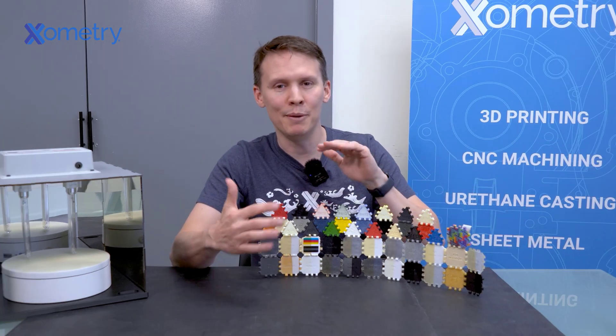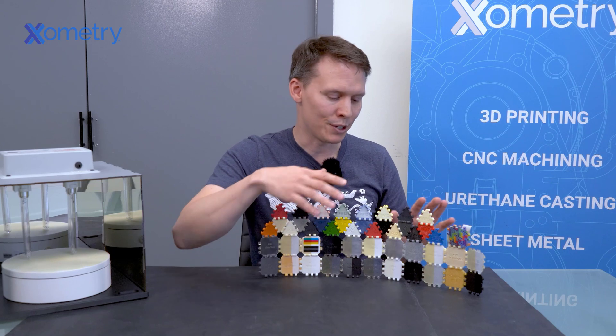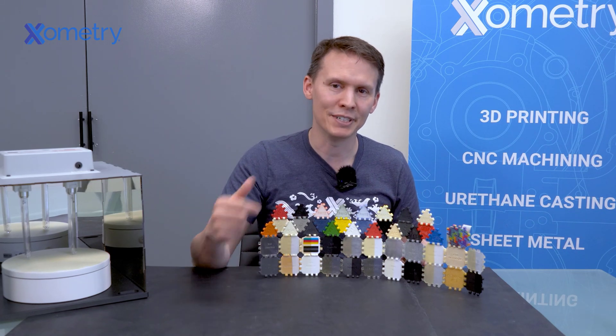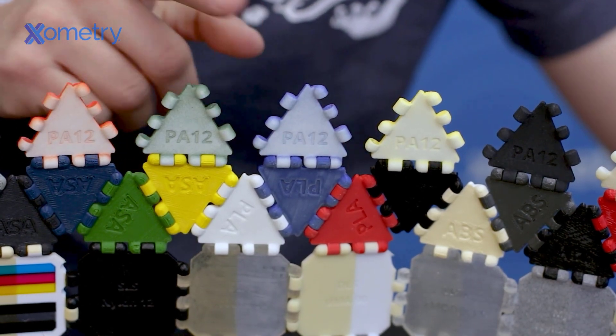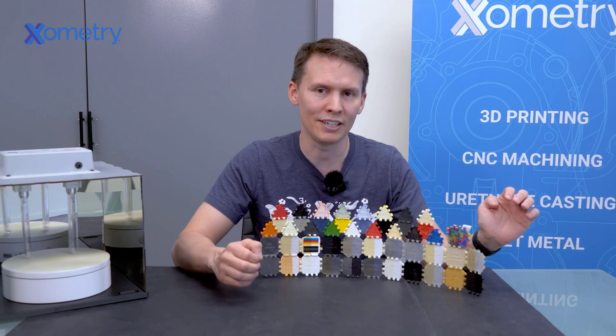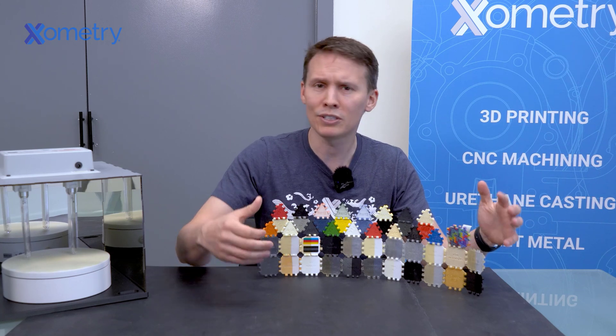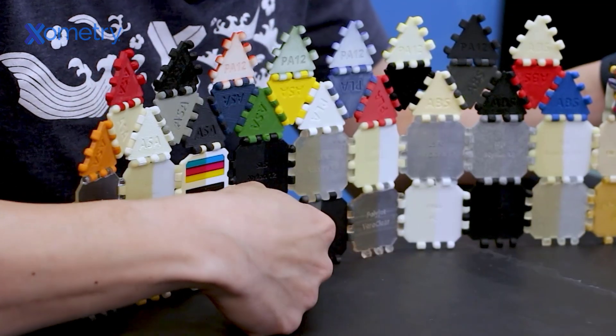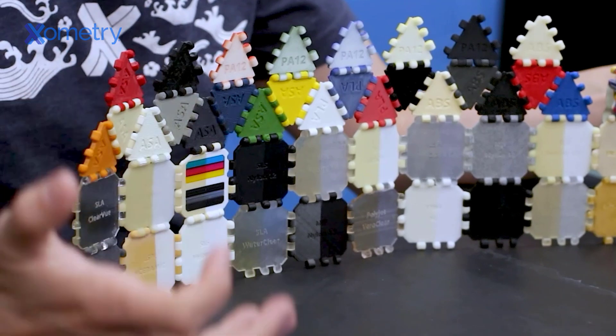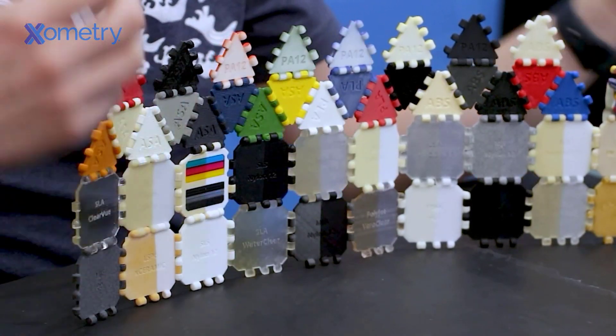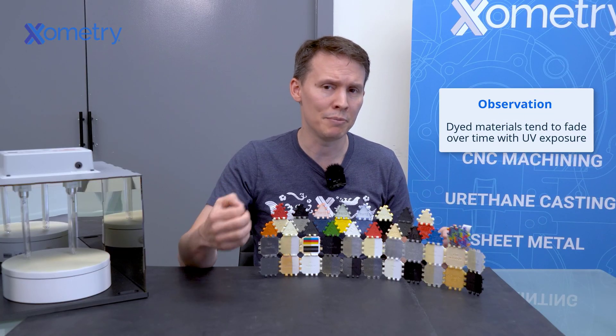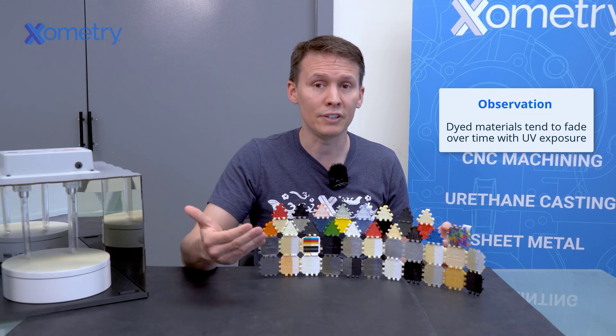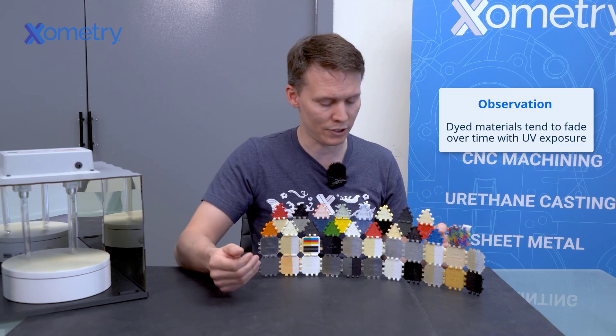I'm going to start from top and move down to the bottom. The very first thing I noticed was how much dyed materials faded out. You can see this on the yellow, blue, green, red, and even some of the black dyed SLS materials. And even on some of the MJF parts at the bottom here, that gray side is actually the UV exposed side and the black side there is the masked side for this test. So you can see that dyed pigmentation can definitely fade and wash out or bleach over time.